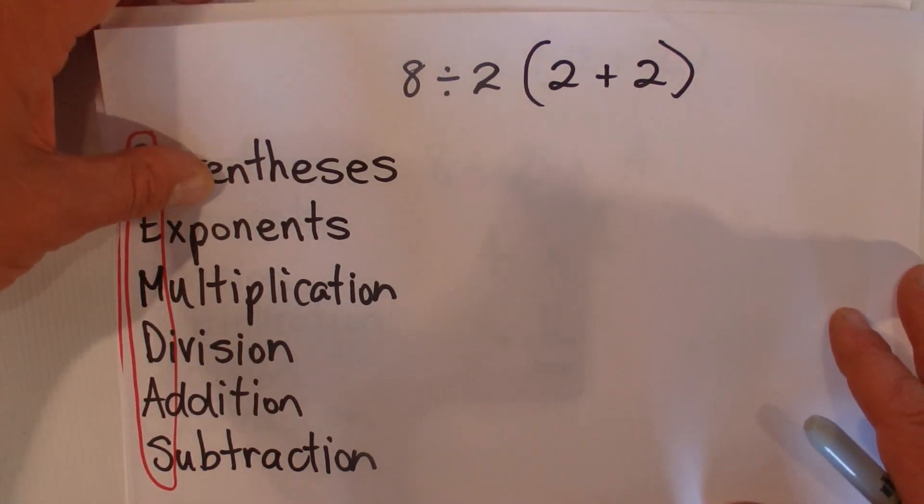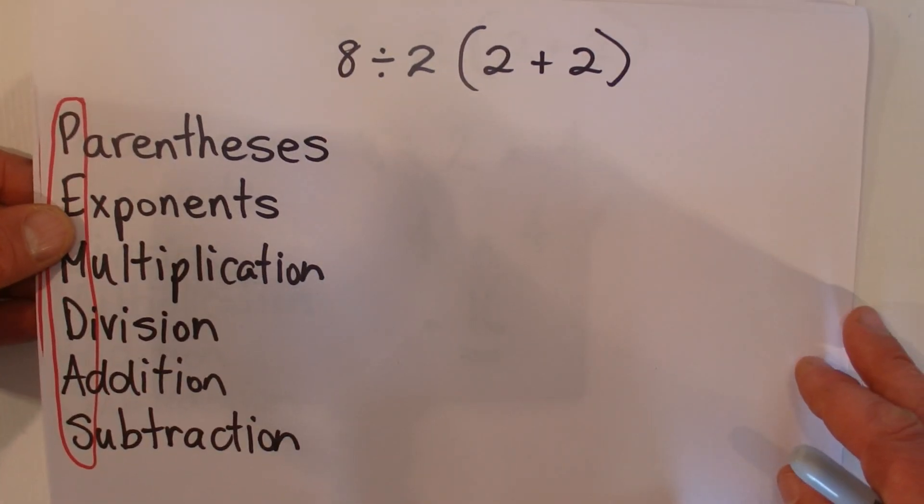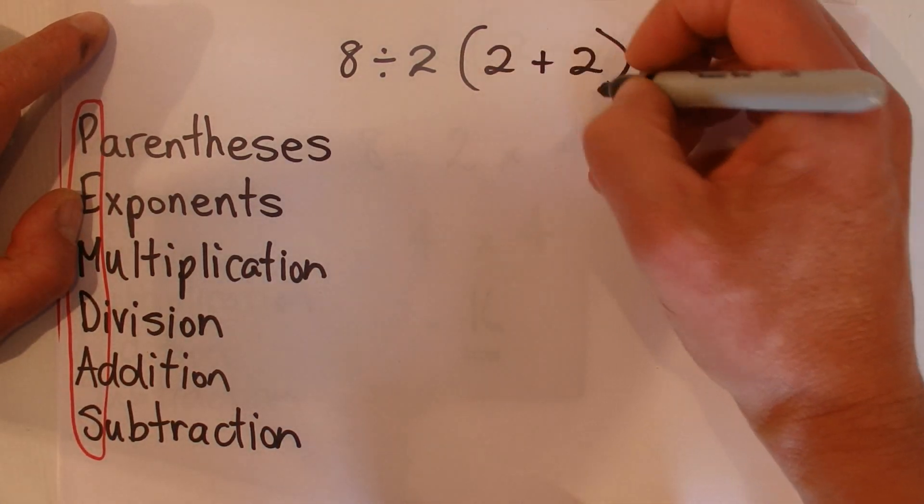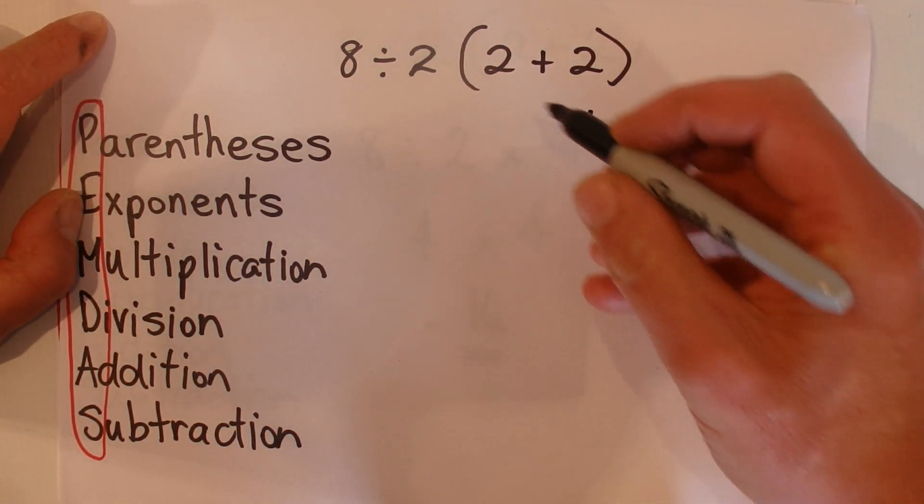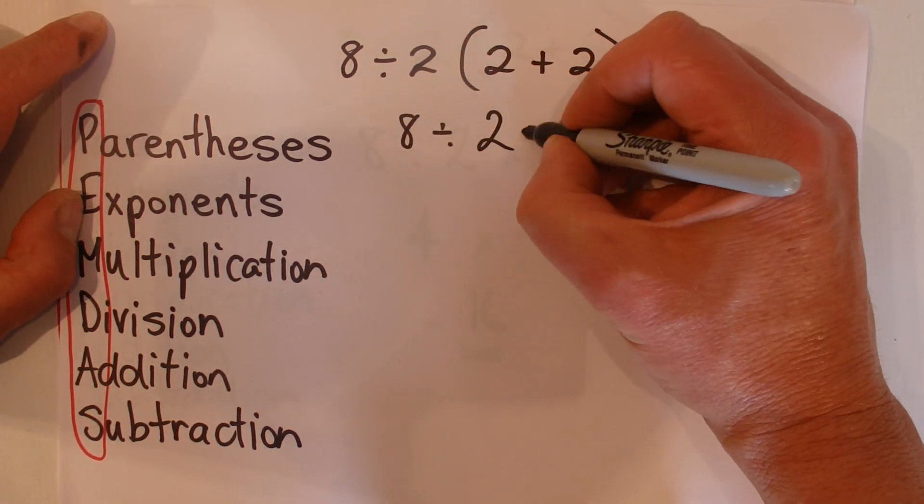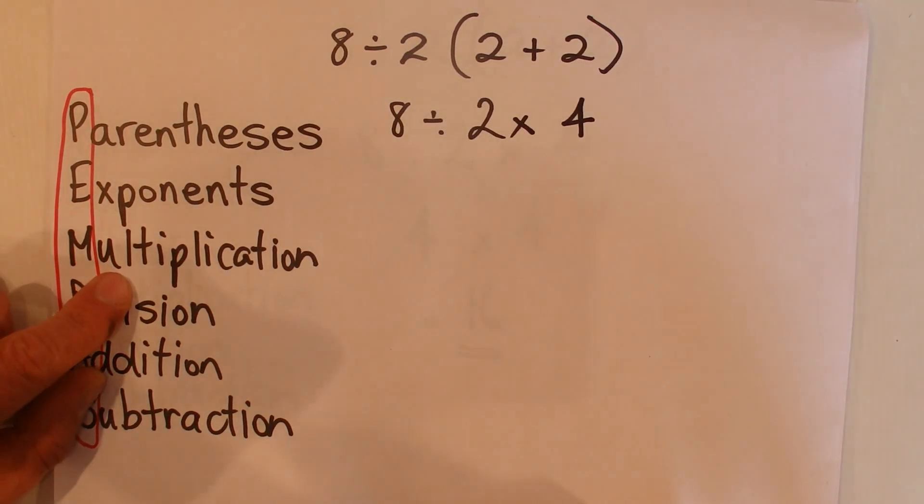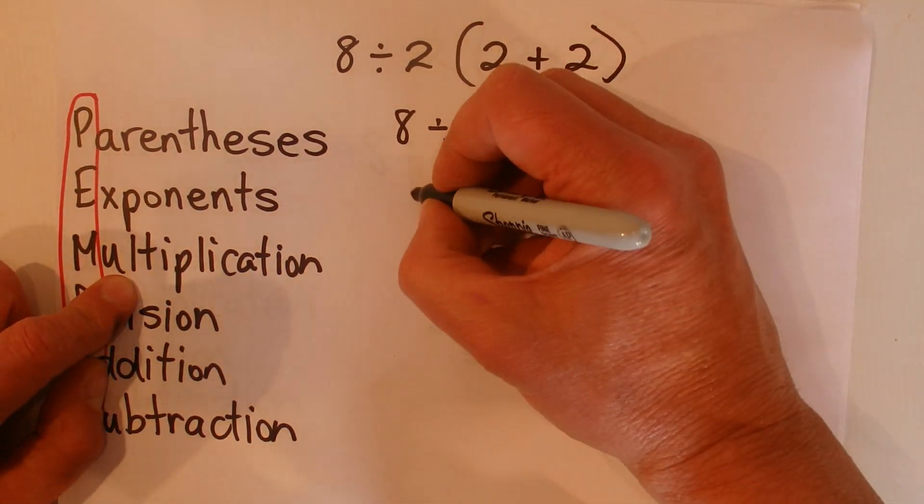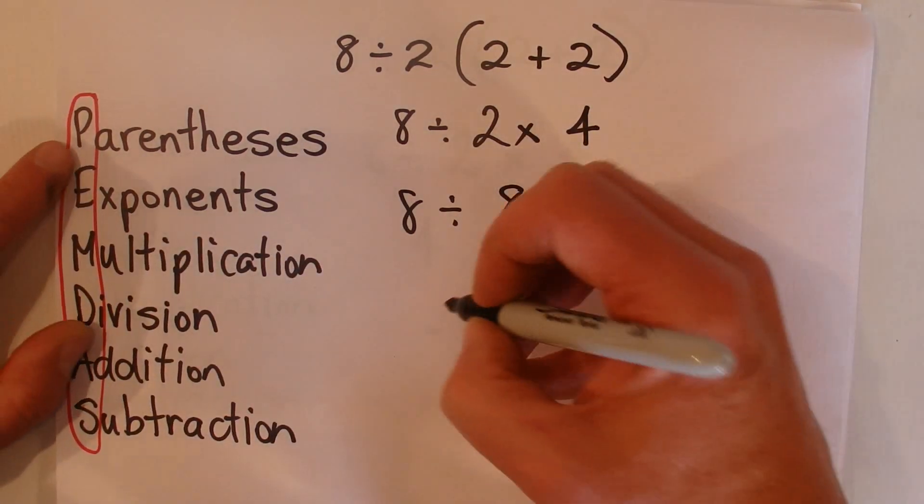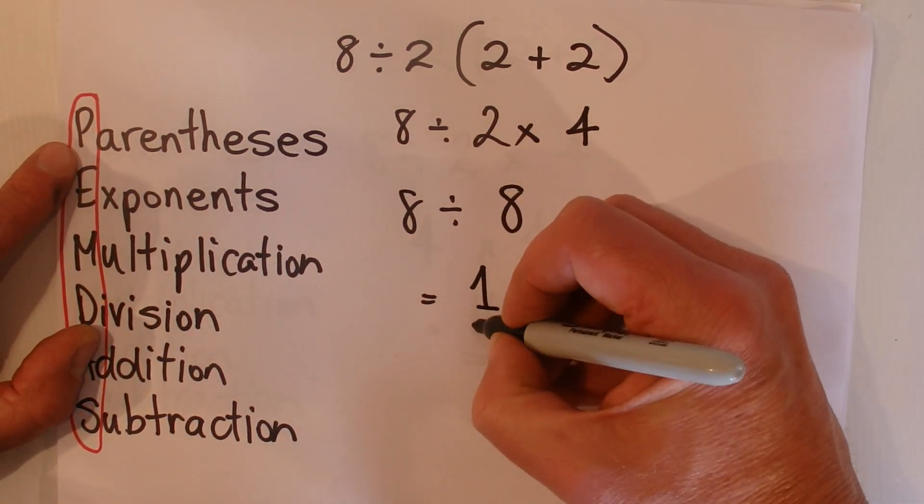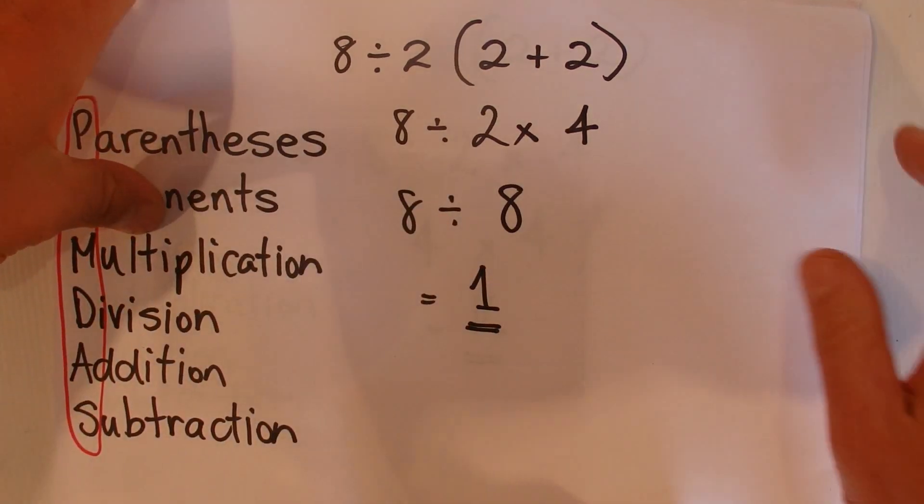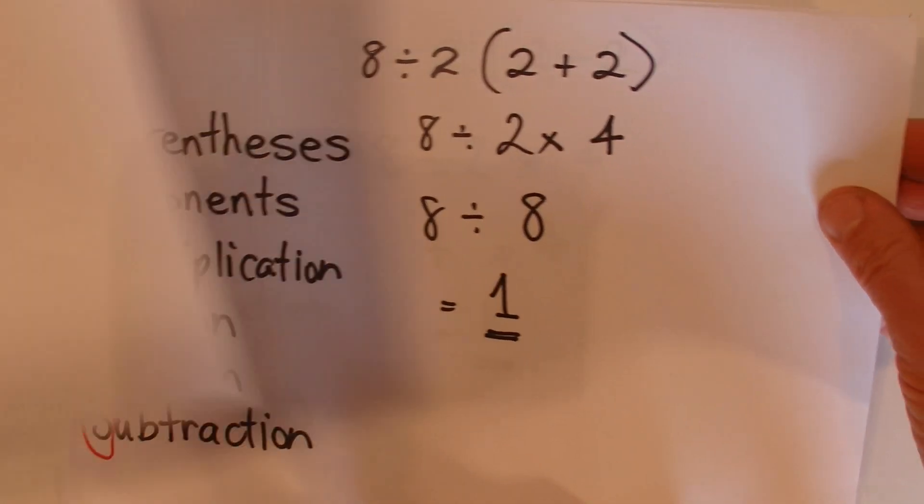You still got to do what's in brackets first: 2 plus 2 is 4. And then 8 divided by 2 times 4, but this one's asking to do the multiplication next. So 2 times 4 is 8, and then 8 divided by 8 equals 1.